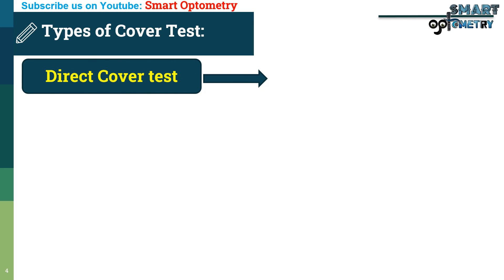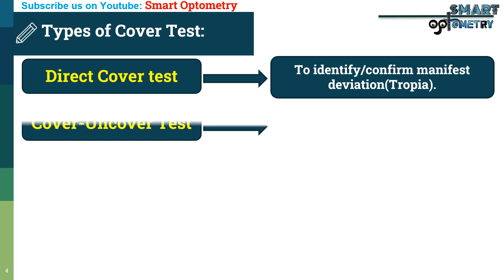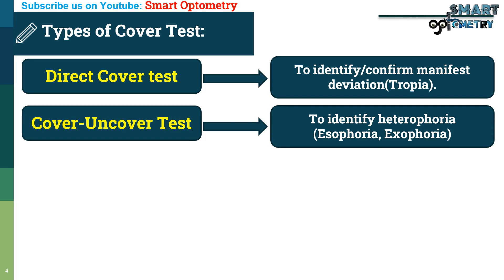The direct cover test is performed to identify or confirm manifest deviation, that is tropia — including esotropia, exotropia, hypertropia, and hypotropia. The cover-uncover test is performed to identify heterophoria, including esophoria, exophoria, hyperphoria, and hypophoria.